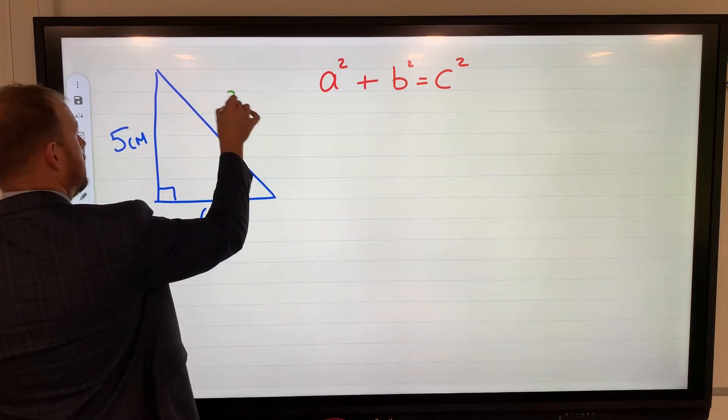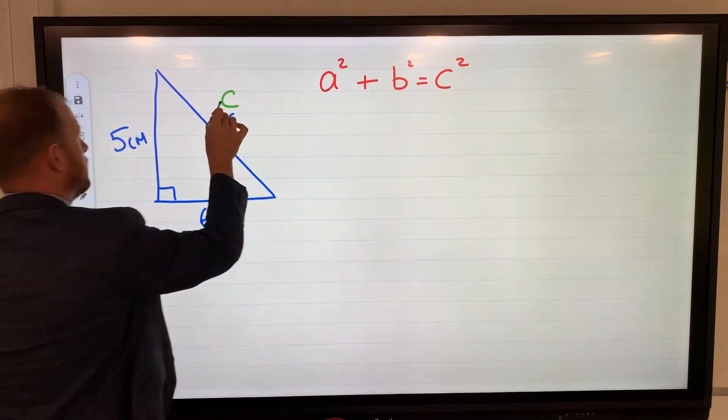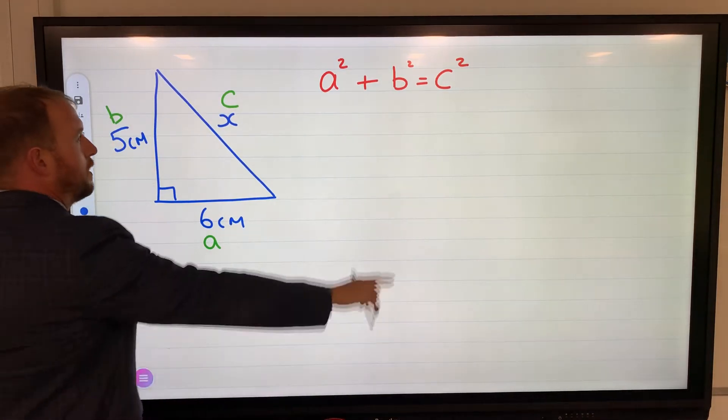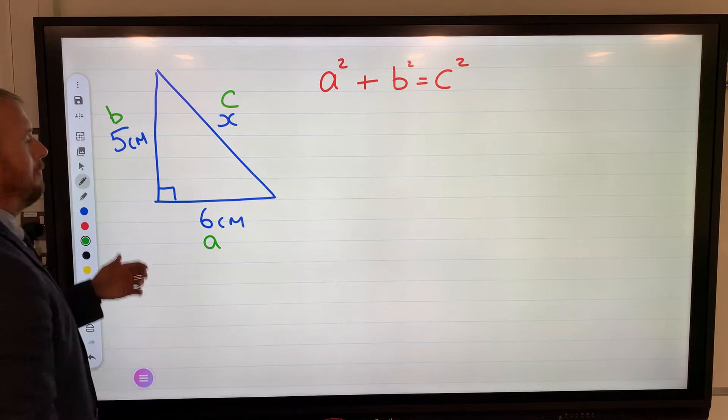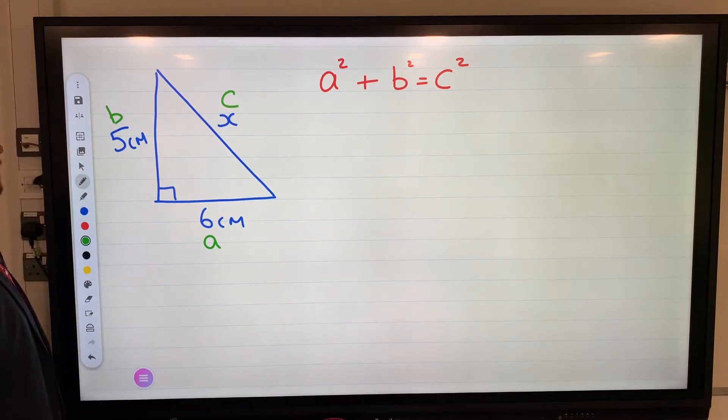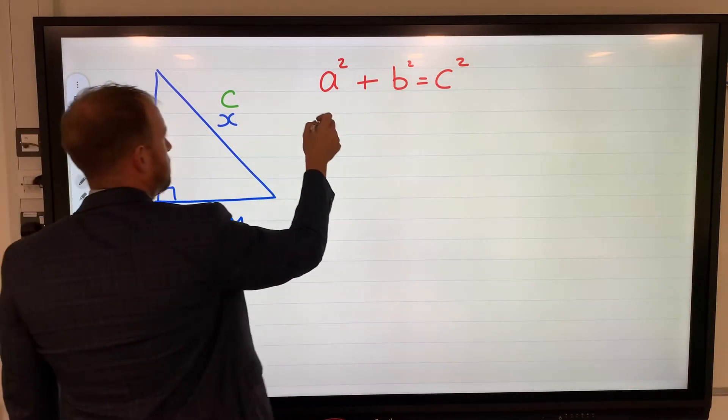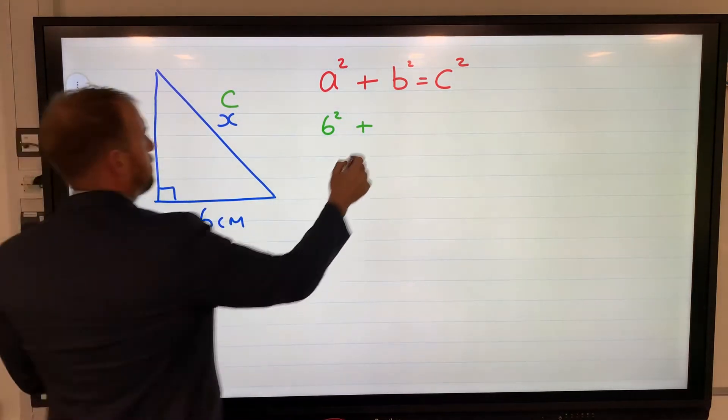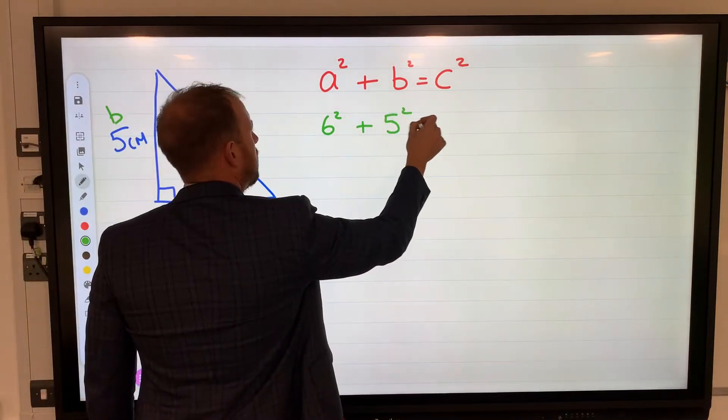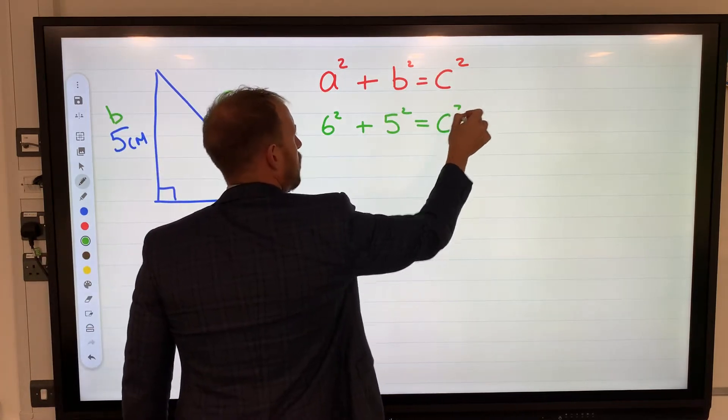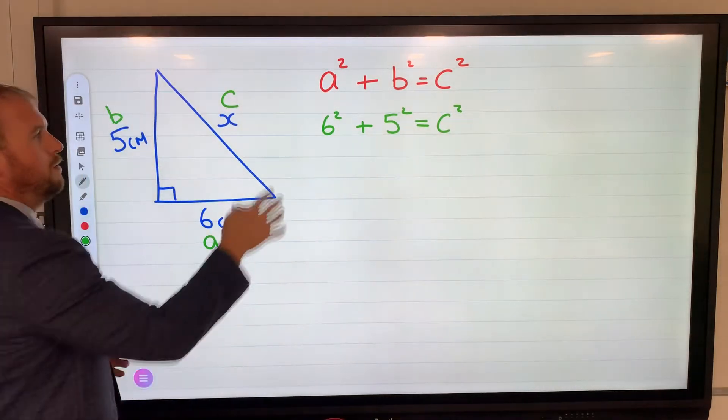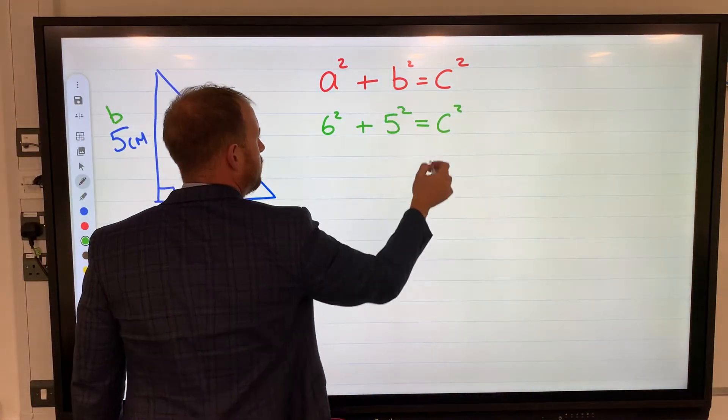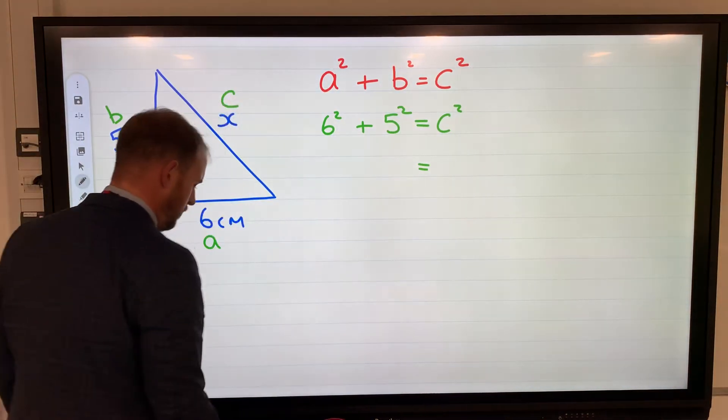So I need to label these sides. The c is the longest side, and then a and b are the others. Now I'm going to use some substitution. If a is 6, let's put 6 into the formula. If b is 5, let's put 5 in there equals c squared. We don't know this value but we're going to use the formula to work it out.